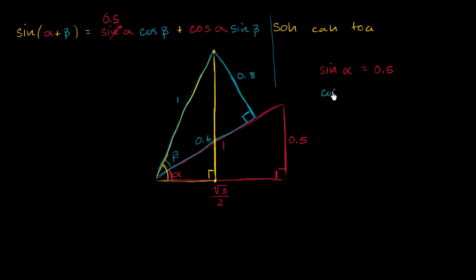Cosine of beta. This is beta. Cosine is adjacent over hypotenuse. So this is beta. The adjacent side is 0.6 over the hypotenuse of 1. So it's 0.6.